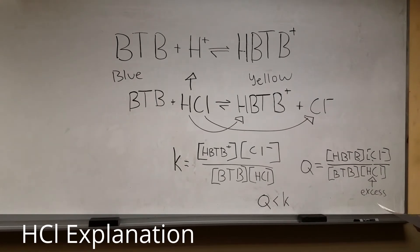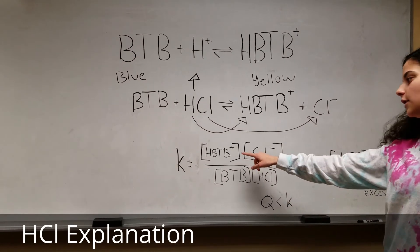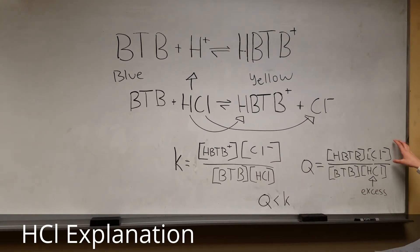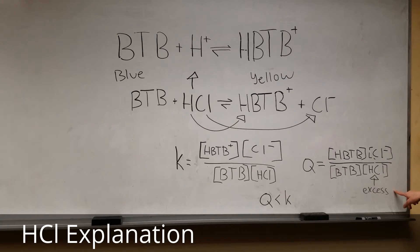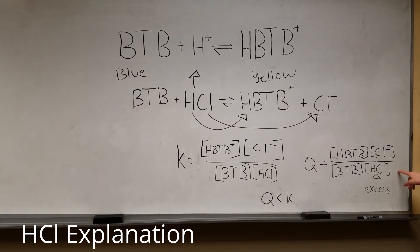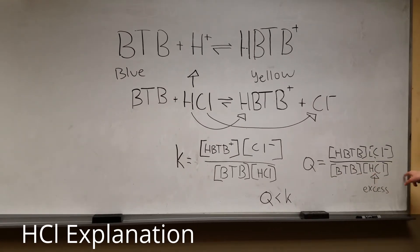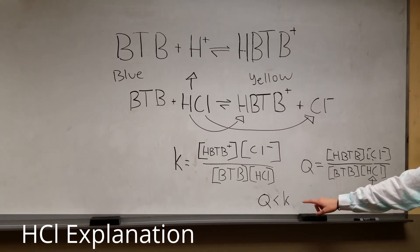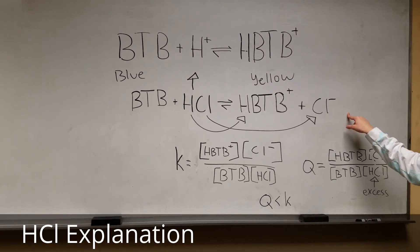This can also be demonstrated by the relationship between K and Q. For this equation, Q equals the concentration of the products over the concentration of the reactants. The concentration of HCl will be higher since we added more HCl throughout the experiment. This creates a smaller number than K because the denominator is larger, making Q less than K and the reactants in excess. Once the reactants are in excess, the equation must shift to the right to balance out this stress.